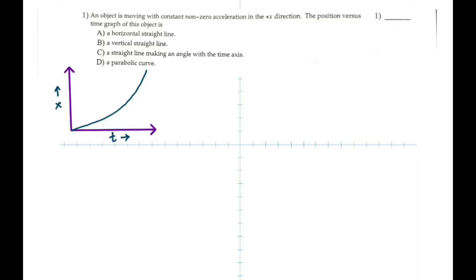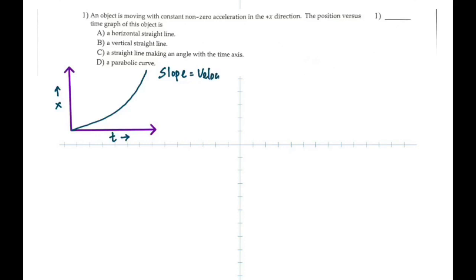The slope has to be increasing because the velocity is increasing — the object is accelerating. So the slope is increasing. The slope of a position-time graph gives you velocity, and the slope has to be increasing.